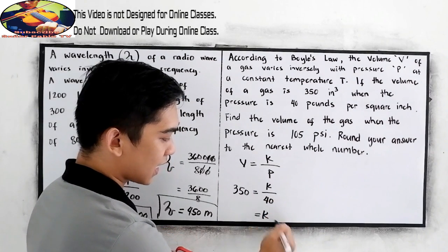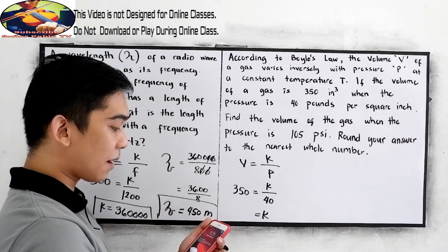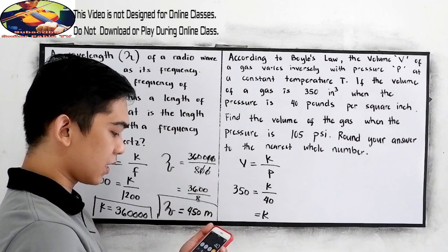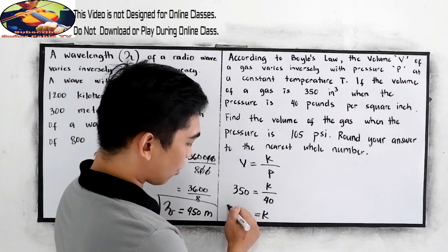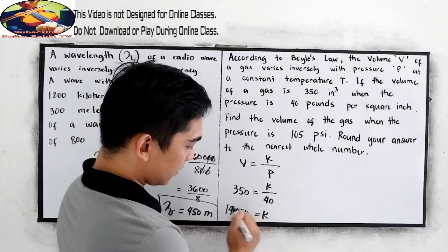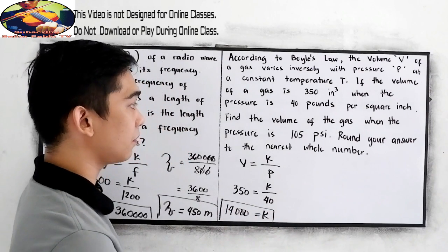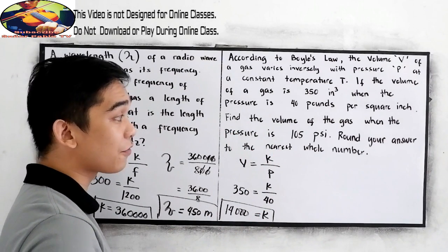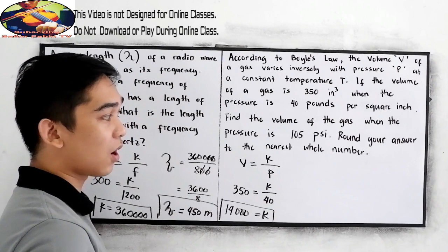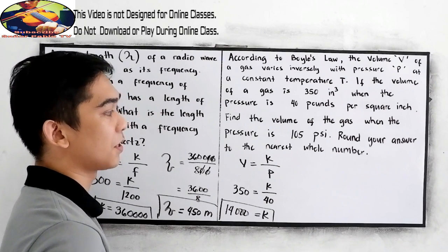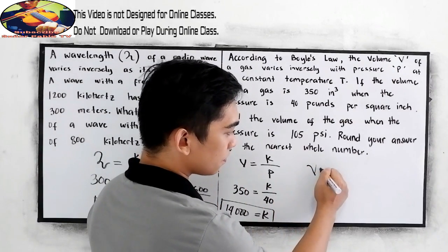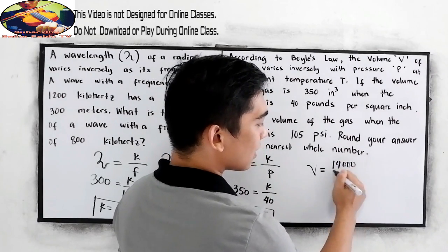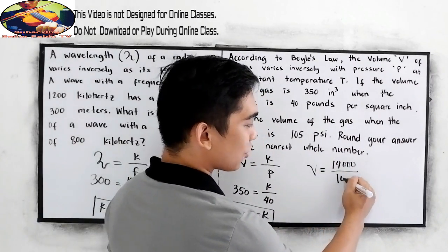Now, cross multiply. K is 350 times 40. So, 350 times 40, that is 14,000. This is our constant of variation. Find the volume of the gas when the pressure is 105 psi. Round your answer to the nearest whole number.